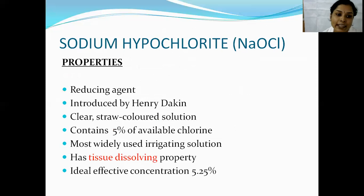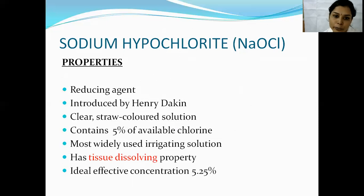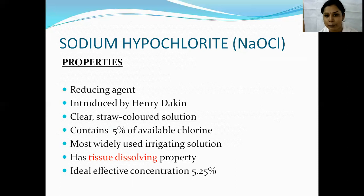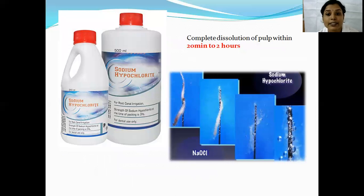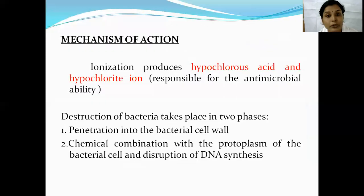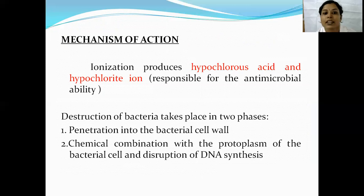Coming to the next root canal irrigant, sodium hypochlorite — it is the most commonly used and most effective root canal irrigant. It is basically a reducing agent. It was introduced by Henry Dakin during World War II and is also known as Dakin's solution. It is a straw-colored fluid and its activity is due to the presence of free chlorine, which is bactericidal in nature. An important property that sets sodium hypochlorite apart from other irrigants is its tissue-dissolving property — it can cause complete dissolution of pulp tissue within 20 minutes to 2 hours. The common concentration used is 5.25%. The mechanism of action includes the production of hypochlorous acid as well as hypochlorite ions.